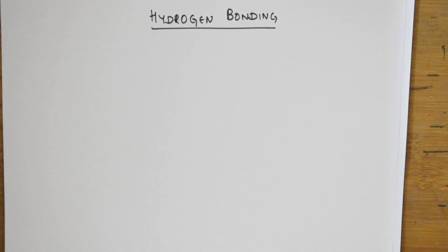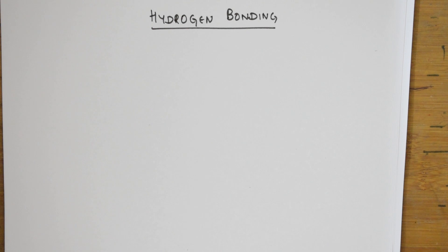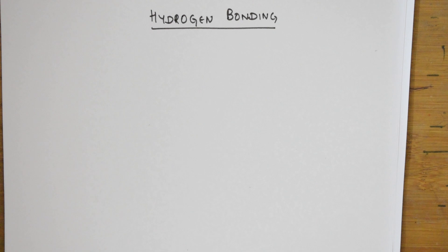Welcome back students to one more session of general organic chemistry. Let us recollect what we have covered so far. In GOC, I've taught you about the concept of electron displacement: inductive effect, hyperconjugation, electromeric effect, mesomeric effect, resonance, tautomerism, and the difference between tautomerism and resonance. All these concepts are done.